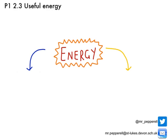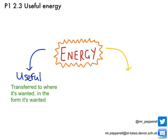So energy can be transferred in two ways. Firstly, energy can be usefully transferred — if it's usefully transferred, we say it's been transferred to where we want it, in the form that we want it. But energy can also be wasted energy, and if it's wasted energy we say that it's not been usefully transferred.